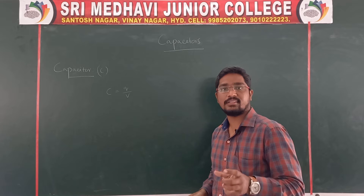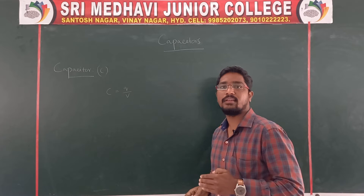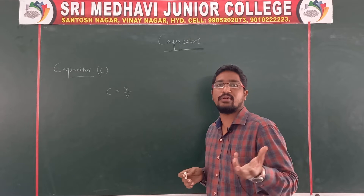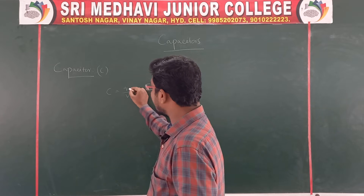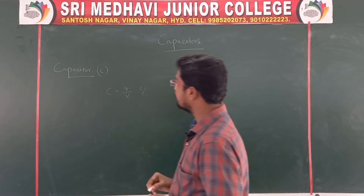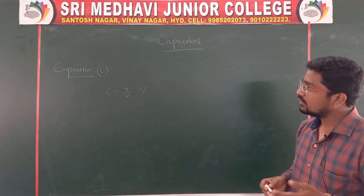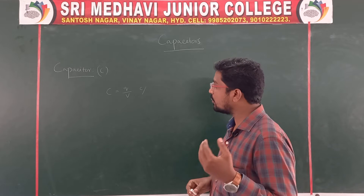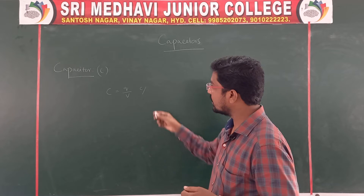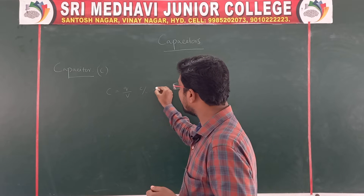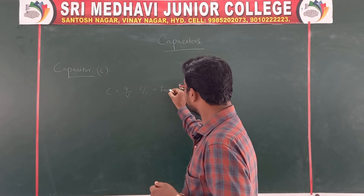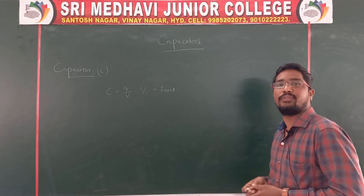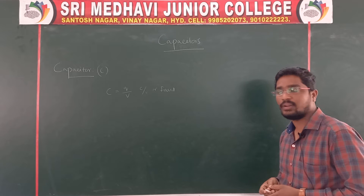What is the unit for capacitance? The unit for charge is Coulomb, and the unit for potential is Volt. So we can take it directly as C by V, which is Farad. Farad is the unit of capacitance of a capacitor.